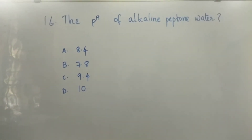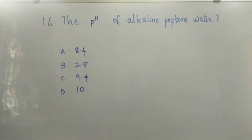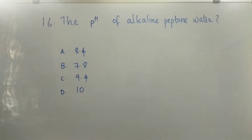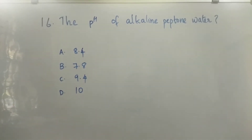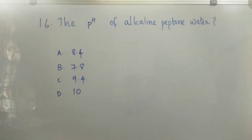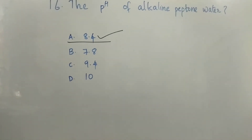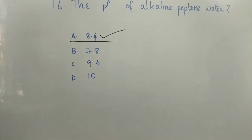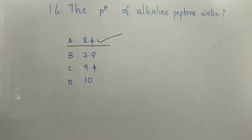Question number 16: The pH of alkaline peptone water — Option A: 8.4. Option B: 7.8. Option C: 9.4. Option D: 10. The right answer is Option A, 8.4. The pH of alkaline peptone water is 8.4.